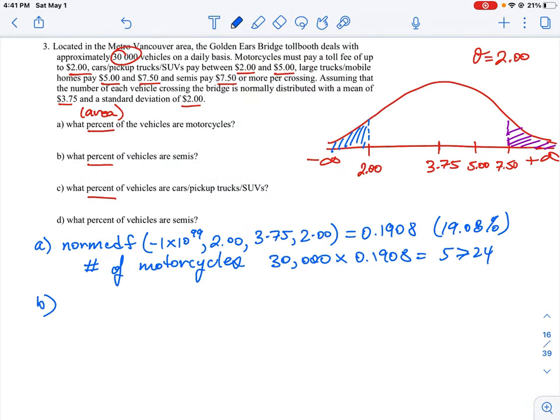We can do this question using the norm cdf function which takes a lower limit and an upper limit. Very easy to plug this in. Our lower limit here is $7.50, our upper limit is positive infinity which is 1 times 10 to the 99, our mean is $3.75, and our standard deviation is $2.00. The percent of semi trucks is going to be a fairly small number, and intuitively it should be because it's just that little tip of the curve there. We find that it's 0.0304, or approximately 3.04 percent.